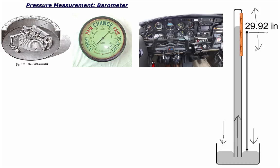Instead we use an aneroid cell barometer. Inside there's a partially evacuated chamber; as atmospheric pressure increases it squeezes the chamber, shrinking it. That chamber is connected to spindles and levers that move a needle on a dial. Where there's lower atmospheric pressure on the dial, we have stormy or rainy conditions. Where there's higher atmospheric pressure, it's fair and very dry. We don't even use these aneroid cells too much anymore either.